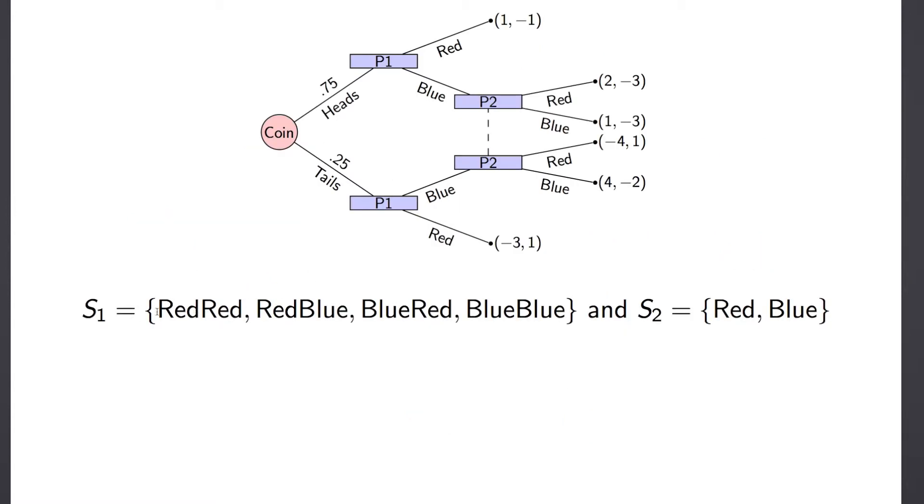Our strategies for player one are red red, red blue, blue red, and blue blue. And the strategies for player two are red and blue. Now remember here, we have to take into account all possible strategies, whether or not they occur. So this red red says player one will choose red if he's here and red if he or she is here.